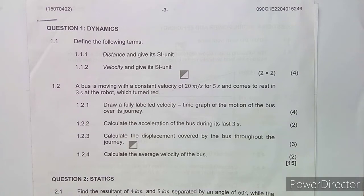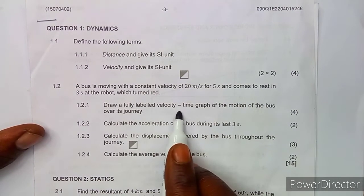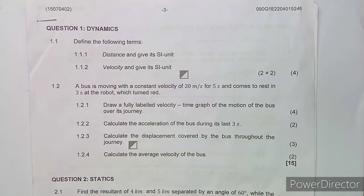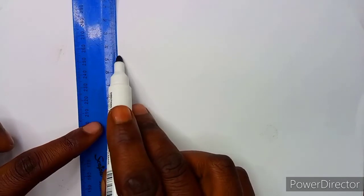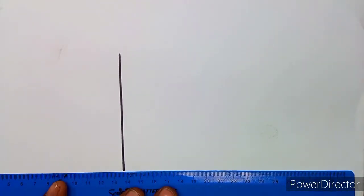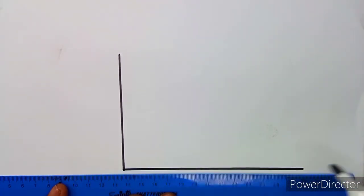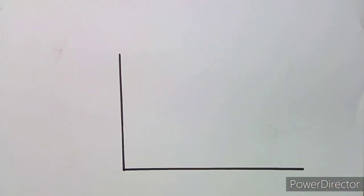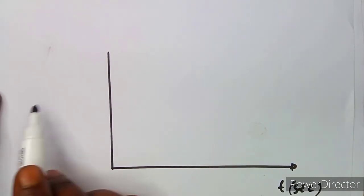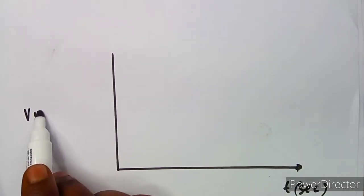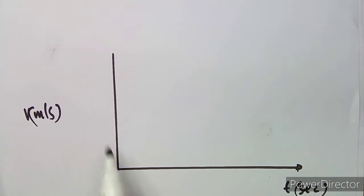Question 1.2.1: draw a fully labeled velocity-time graph of the motion of the bus. When dealing with a velocity-time graph, we need velocity on the y-axis versus time on the x-axis. The time axis is measured in seconds and the velocity axis is measured in meters per second. Let's say this is at zero.